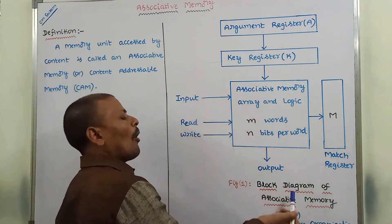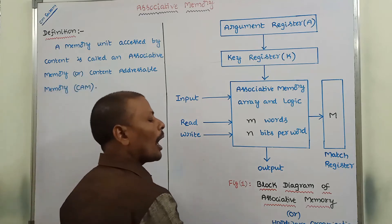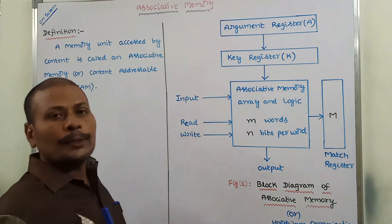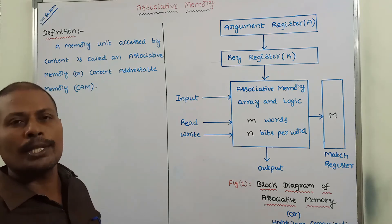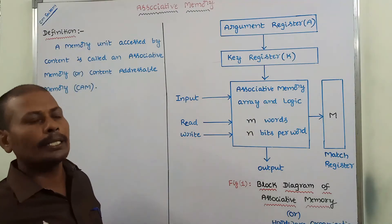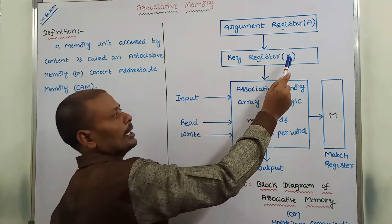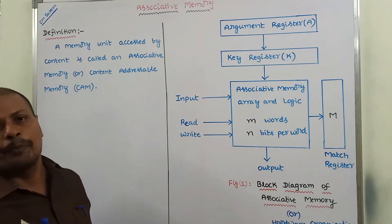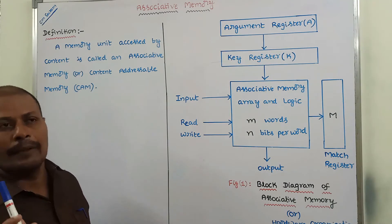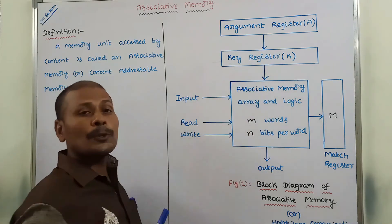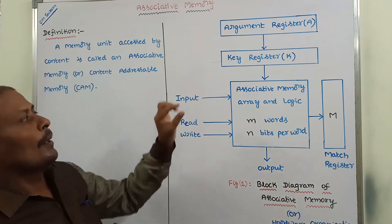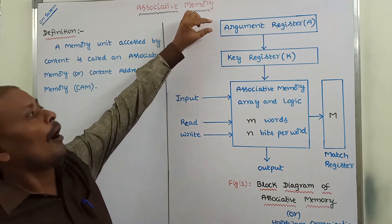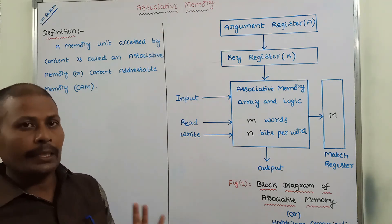This is the block diagram, or hardware organization, of associative memory. It contains two registers. The first one is the argument register, denoted by capital A, and the second one is the key register, denoted by capital K. The argument register contains the content and is used for performing the comparison operation.